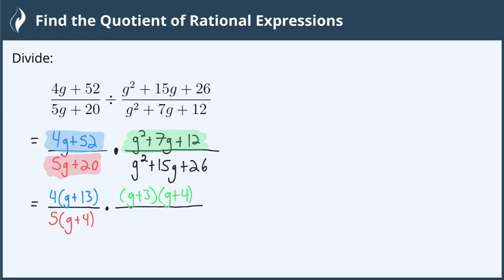And we can do this with the denominator as well, because we're looking for two numbers that multiply to 26 but add to 15. So the two numbers that do that are going to be g plus 13 and g plus 2, because 13 and 2 multiply to 26 and add to 15.